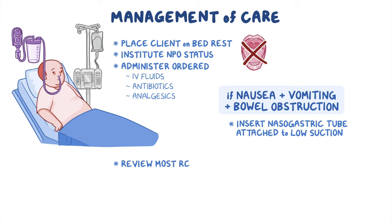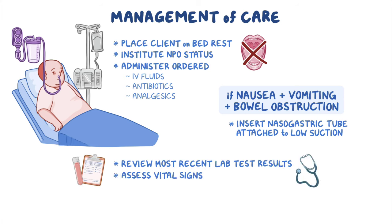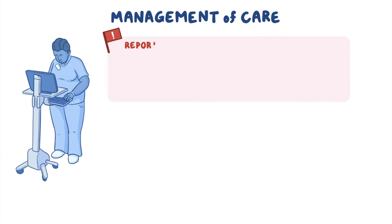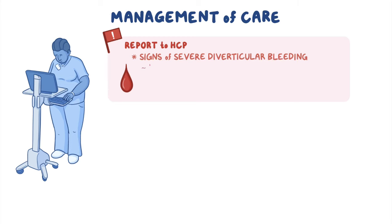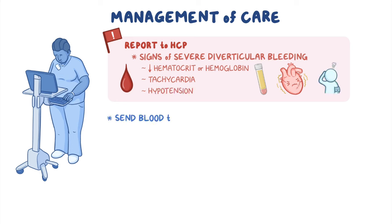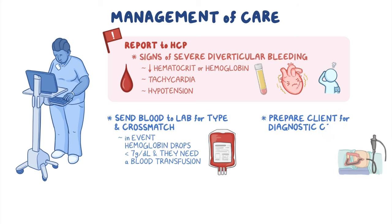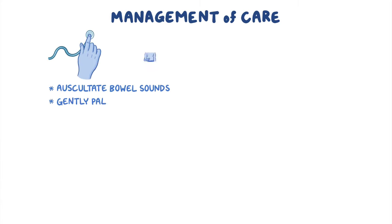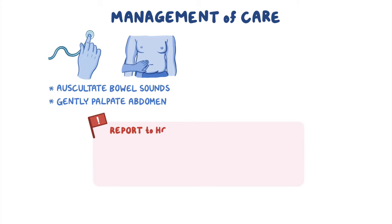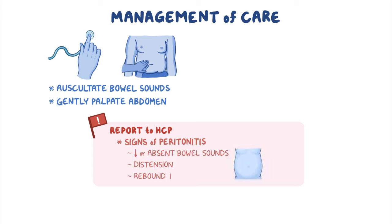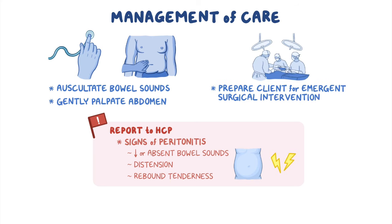Next, review their most recent laboratory test results and assess their vital signs. Immediately report signs of severe diverticular bleeding to the healthcare provider, such as decreased hematocrit or hemoglobin, or tachycardia or hypotension. Then send blood to the lab for type and crossmatch in the event that their hemoglobin drops below 7 grams per deciliter and they need a blood transfusion. Prepare your client for diagnostic colonoscopy as ordered. Additionally, auscultate your client's bowel sounds and then gently palpate their abdomen. Immediately report to the healthcare provider signs of peritonitis, including diminished or absent bowel sounds, distention, and rebound tenderness. And prepare your client for emergent surgical intervention as ordered.